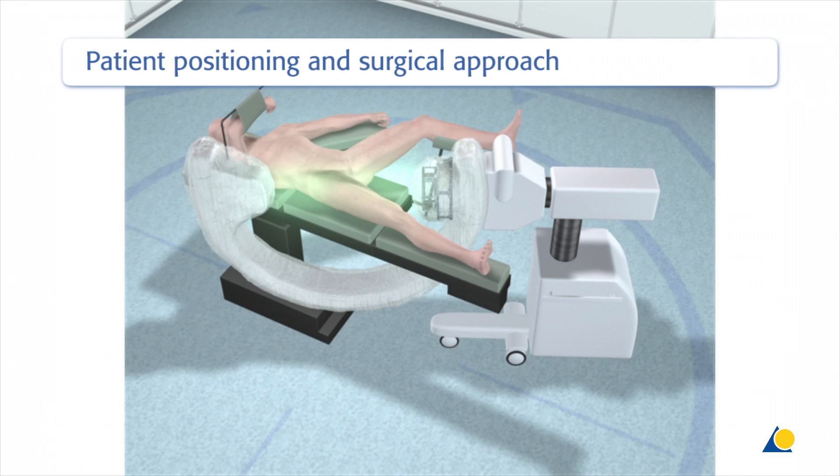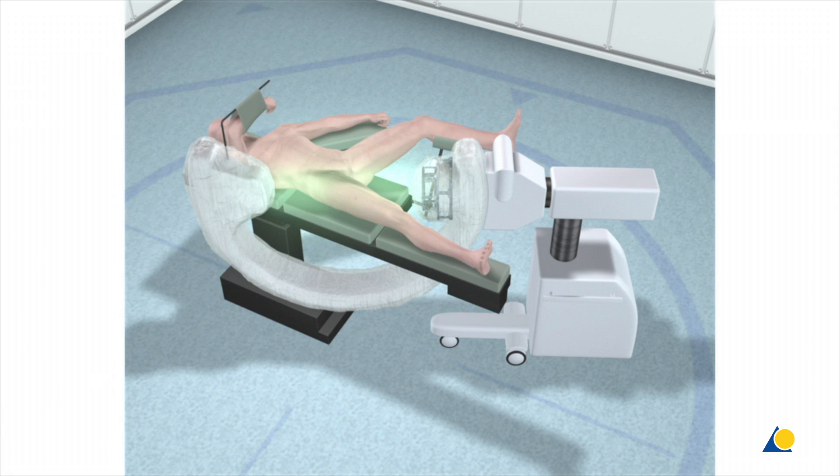The patient is positioned supine on a radiolucent OR table with the uninjured leg placed in a leg rest in flexion and abduction to allow for an image intensifier to be placed between the legs.